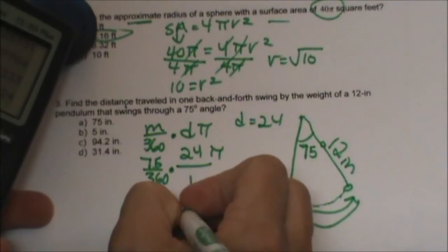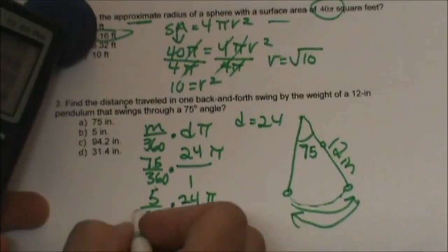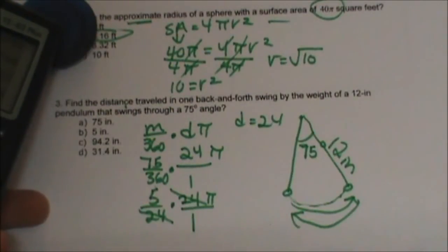5/24 times 24 over pi times pi over 1, oh how handy, that cancels out doesn't it?